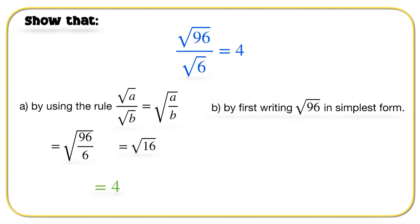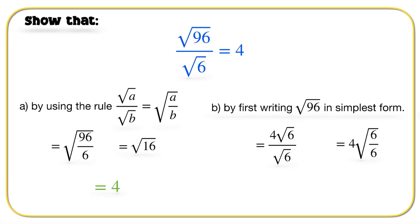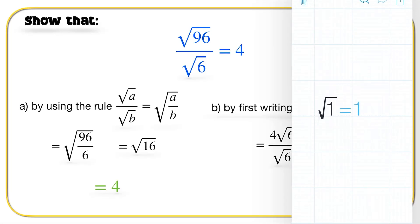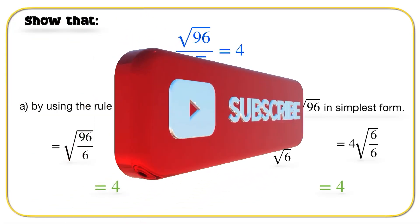For part B, we simplify root 96 first. Root 96 can be written as 4 root 6, because it's root 16 times root 6, and root 16 equals 4. So we get 4 root 6 over root 6. We can then write 4 root 6 over root 6 as 4 times root of (6/6), which is root 1. Root 1 equals 1, so we end up getting 4 times 1, which is 4.